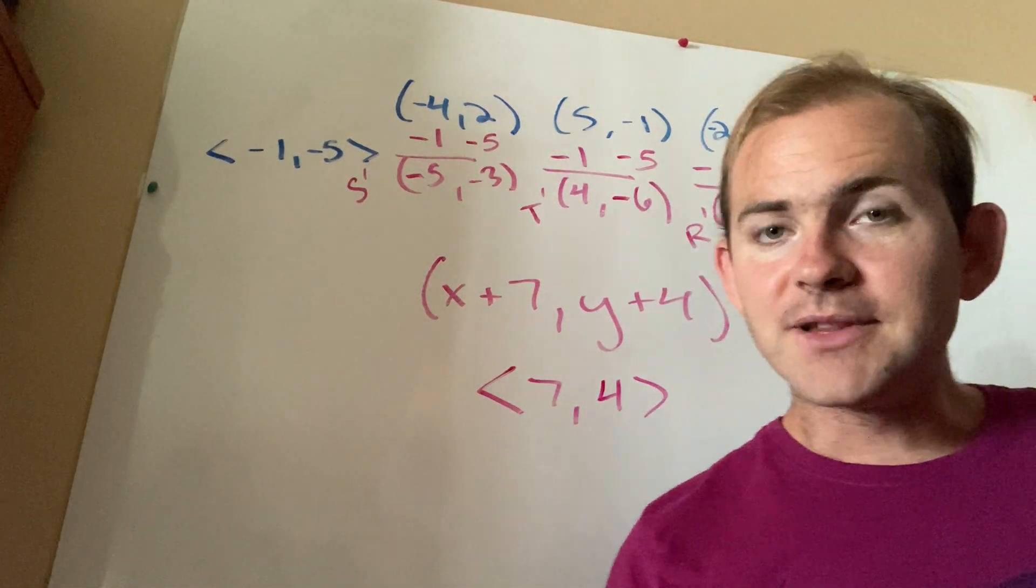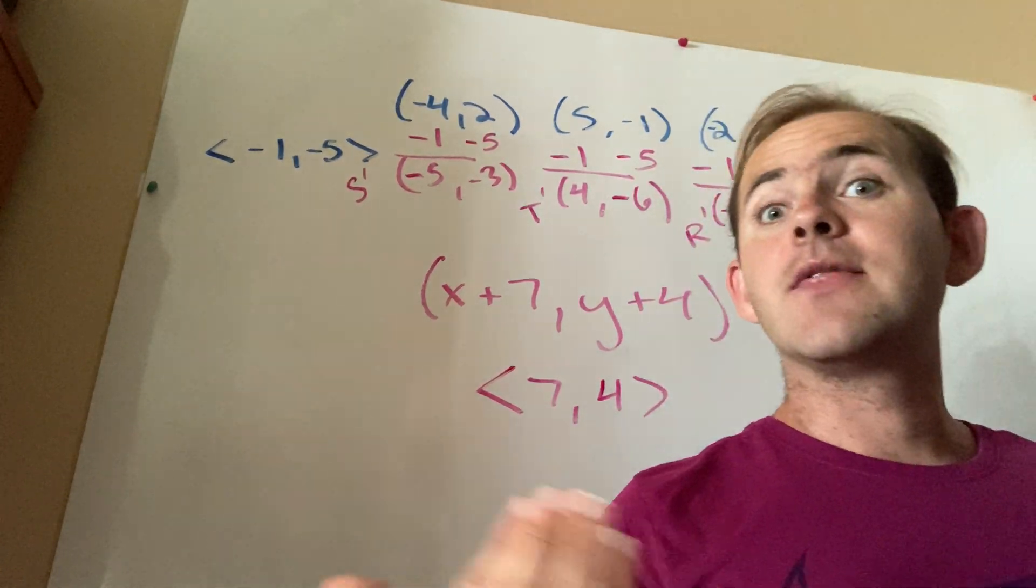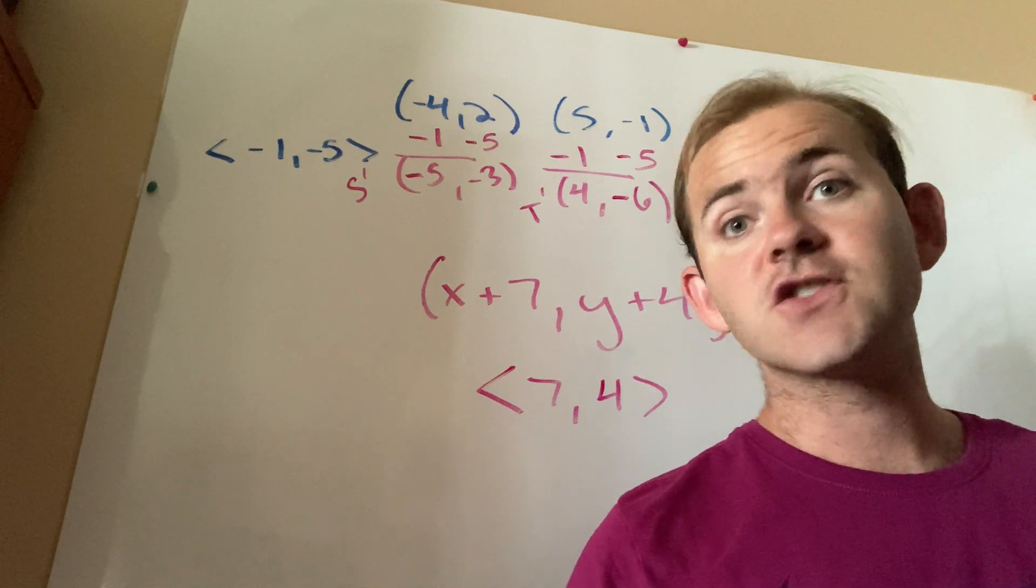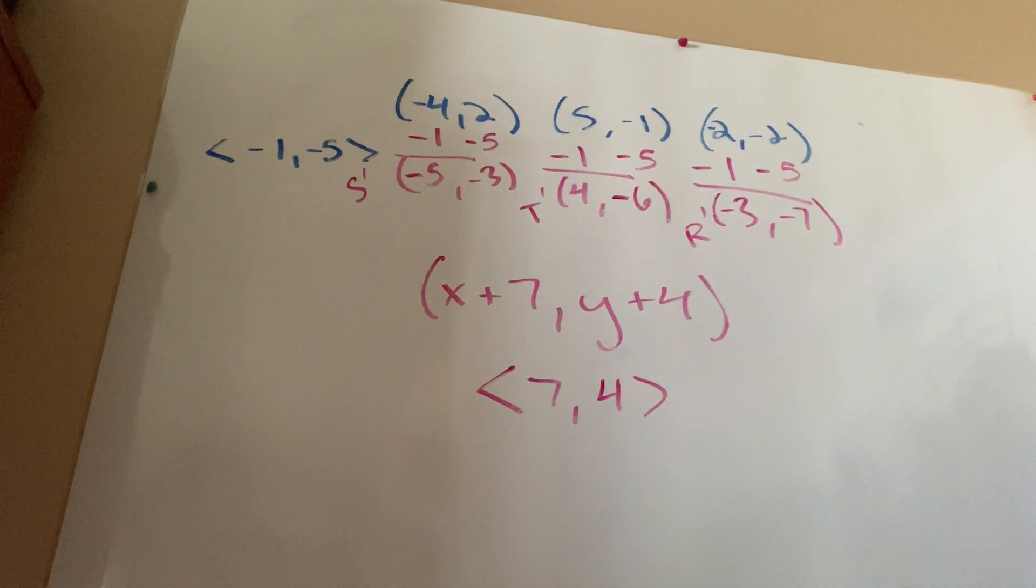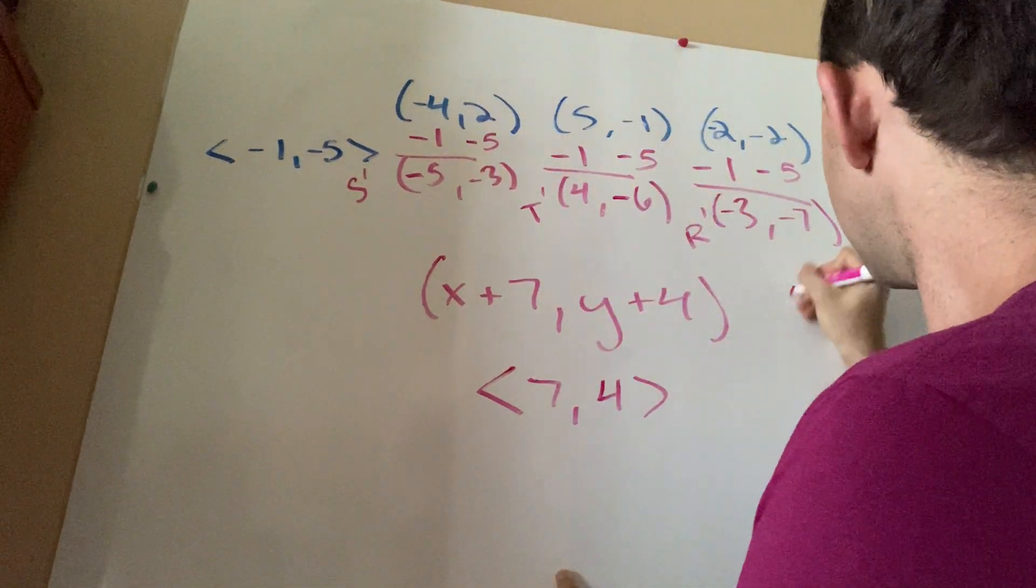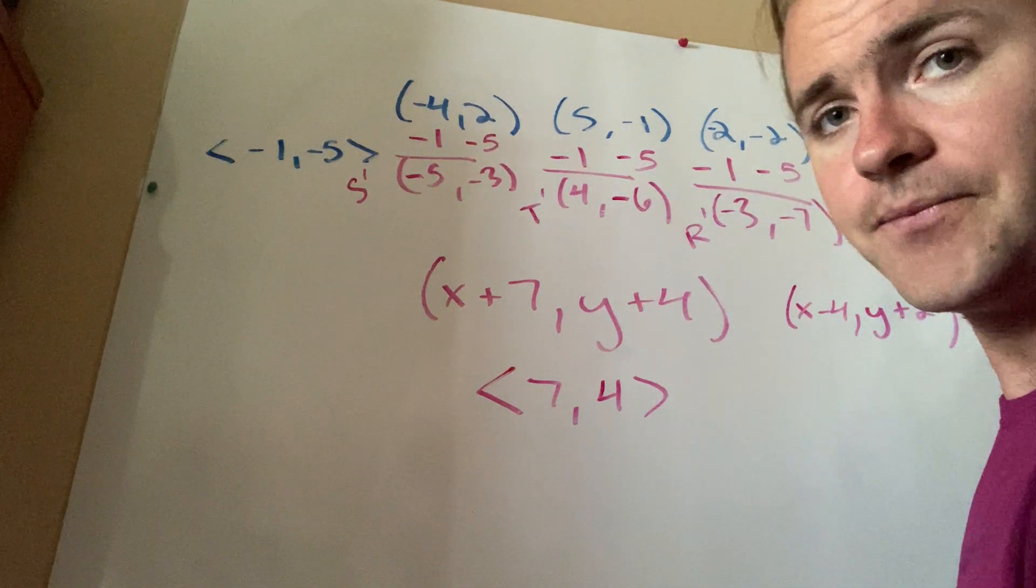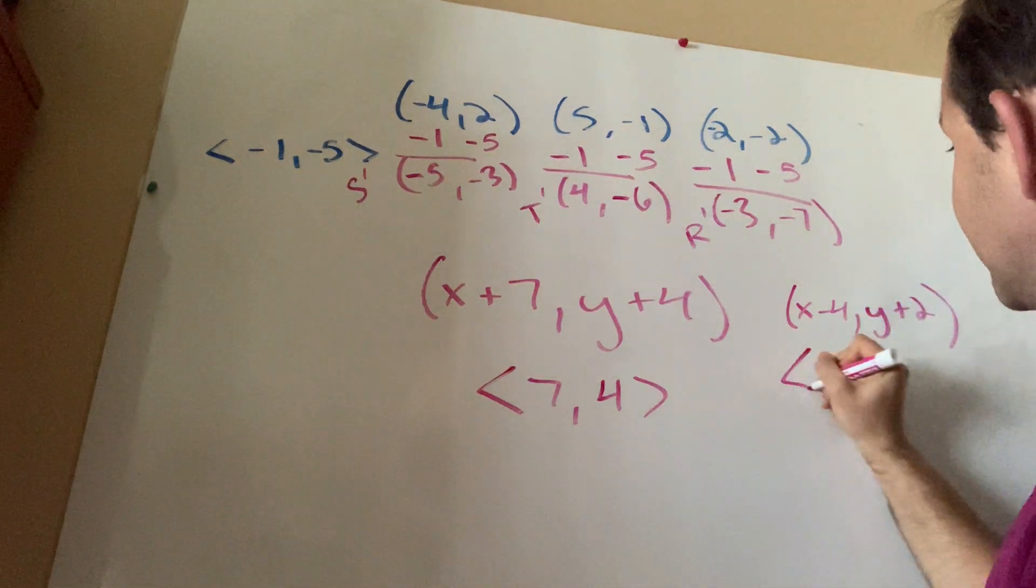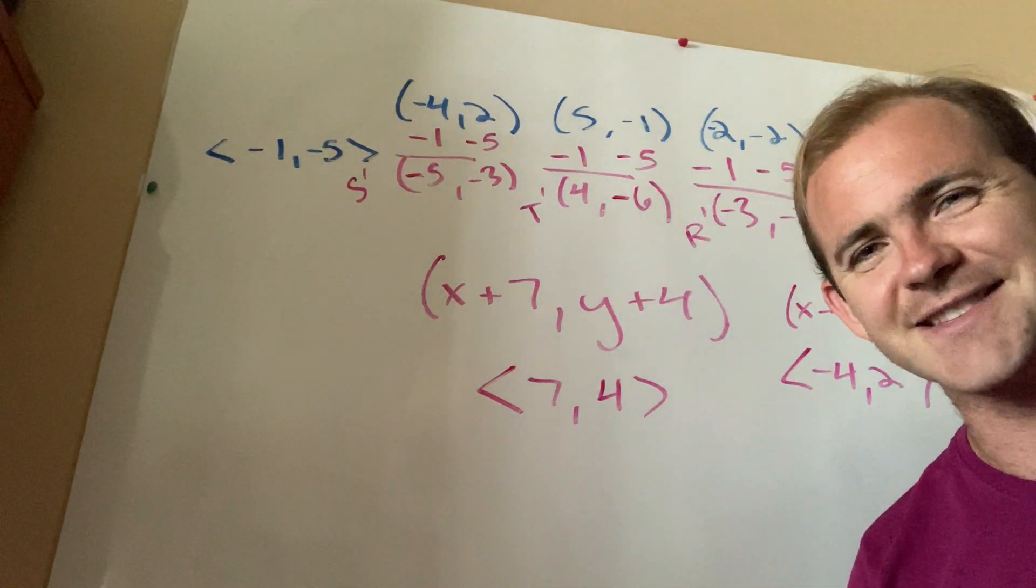And if you want one more example of this, just take a look with me at example 16. For example 16, the original image is actually on the right, and the way we know that is because there's no prime. There's no little pesky apostrophe there. So I'm going to put my finger on, let's say, m. To get from m to m prime, I have to go four units to the left and then two units up. So four to the left would be x minus 4, and then two units up would be y plus 2. And if I want to represent that as a vector, I can just do it as negative 4 comma 2 inside those beautiful little sideways things.